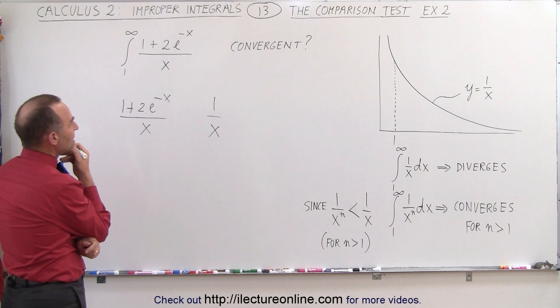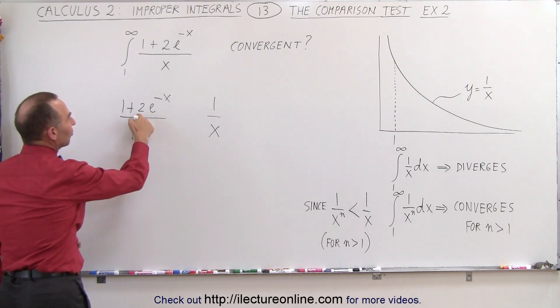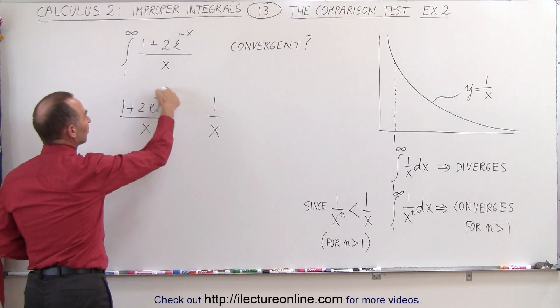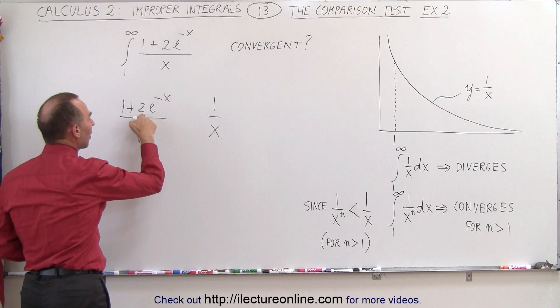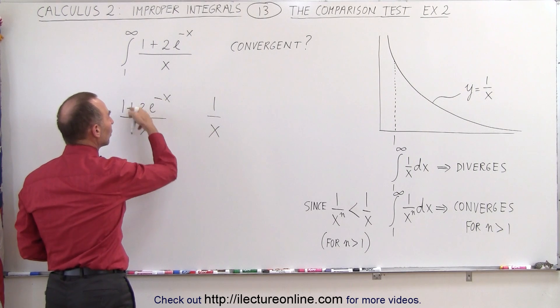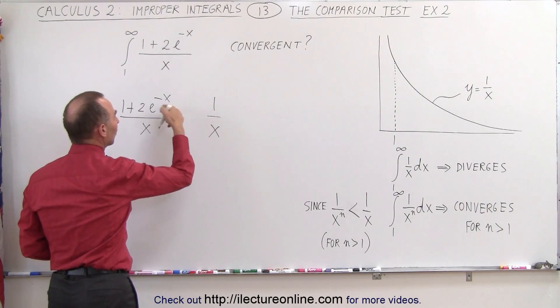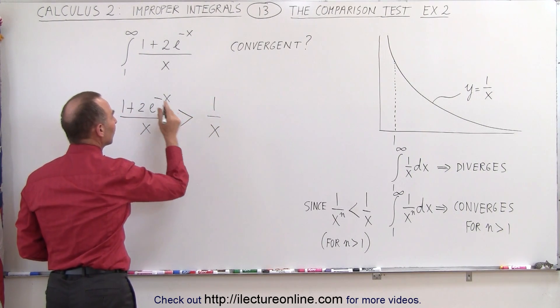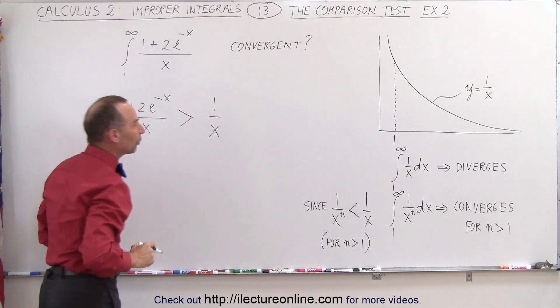Let's see here. This number here will always be positive. So we have 1 plus a positive number over x. How does that compare to 1 over x? Well, this numerator will always be bigger than 1. If it's always bigger than 1, we know that this on the left side will be greater than 1 over x.